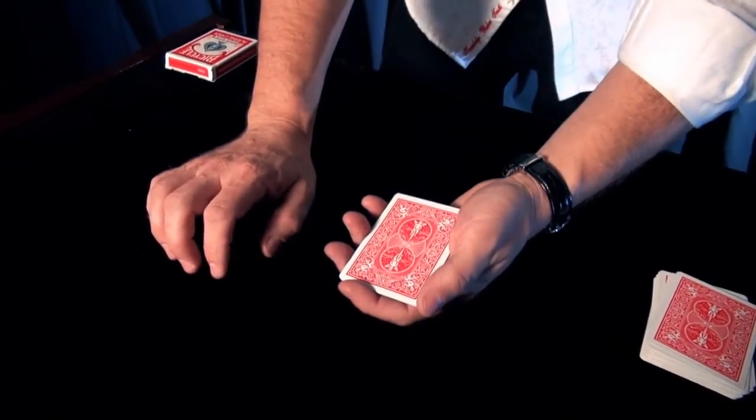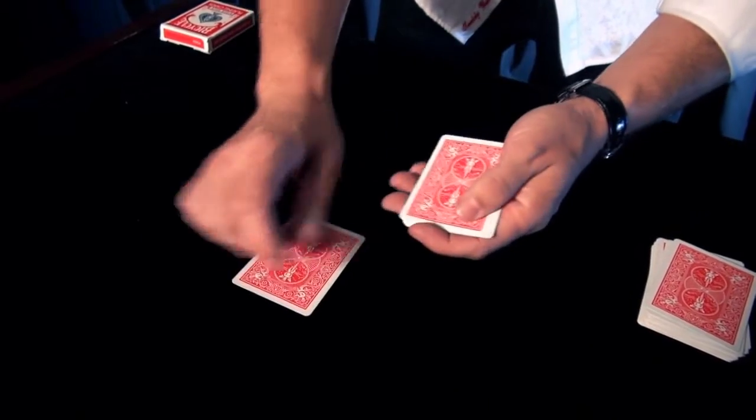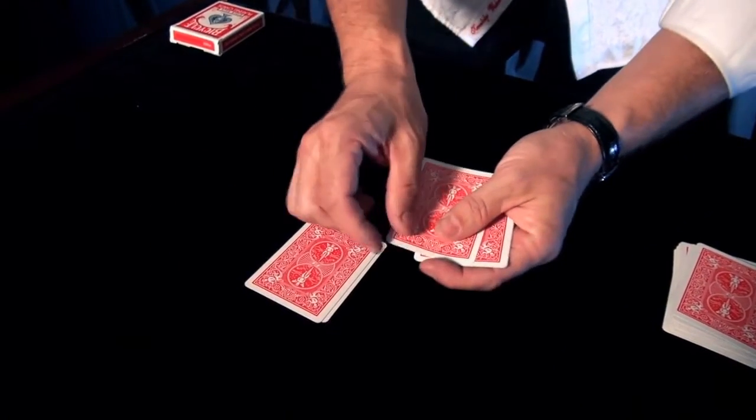The first technique that we can use is called a crimp. Here's what a crimp is. A crimp is when you place a tiny bend in the corner of a playing card.